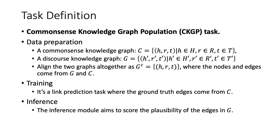The task of Discourse is defined as a common sense knowledge graph population task. The common sense knowledge graph is denoted as C, where the elements are triples H, R, T. We also have a discourse knowledge graph G, with elements denoted as H', R', T'. First, we need to align the two resources together as GC, where nodes and edges come from both G and C. In the training process, we use the edges from common sense resource C as ground truth edges to train a link prediction model that scores the triples.